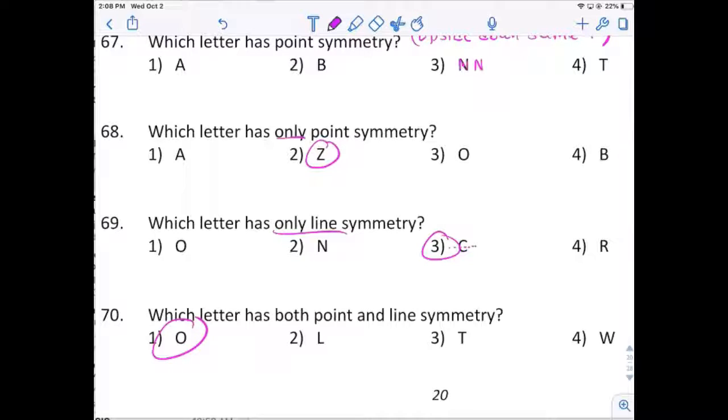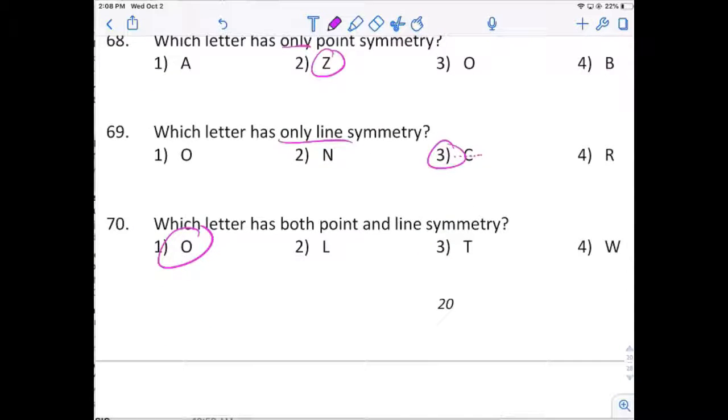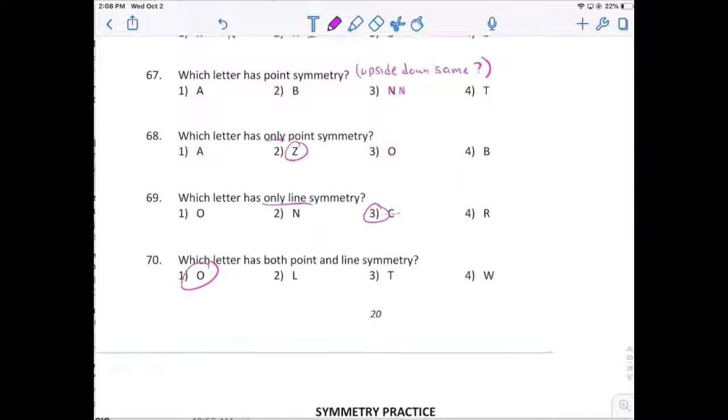Number 70. Which one has both point and line? That would be your O. Okay, you can always pause and go back there.